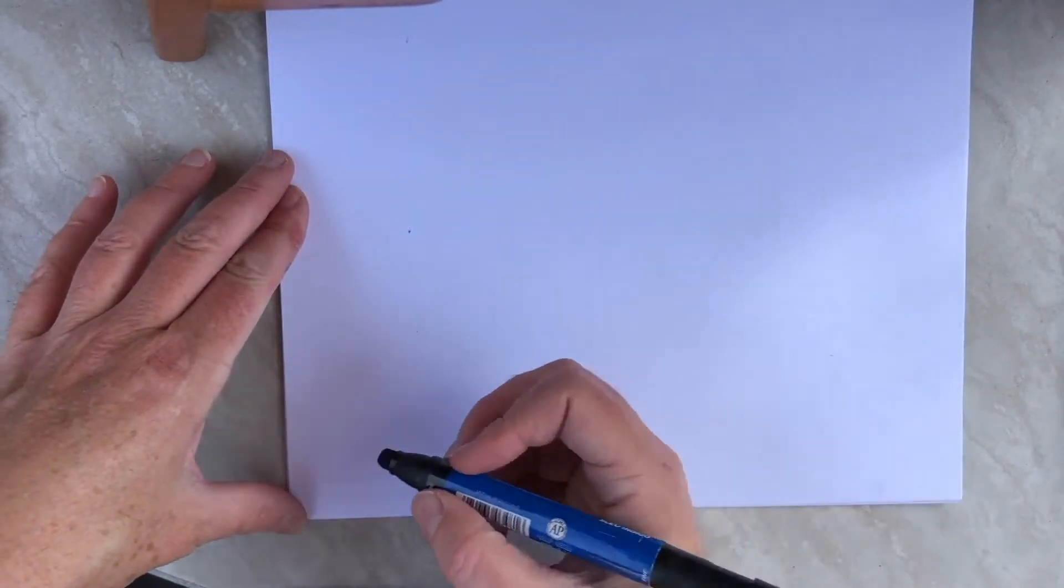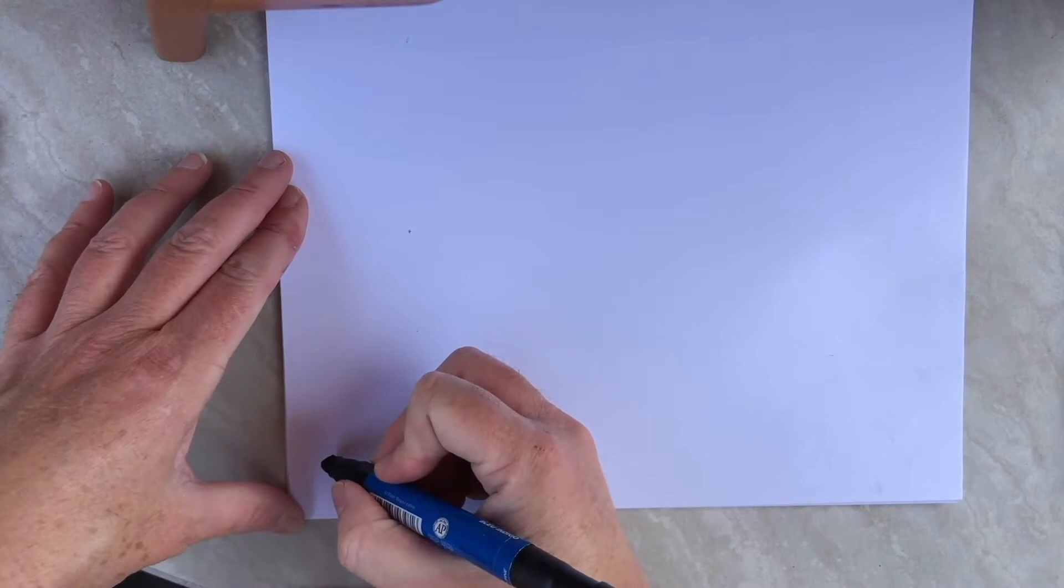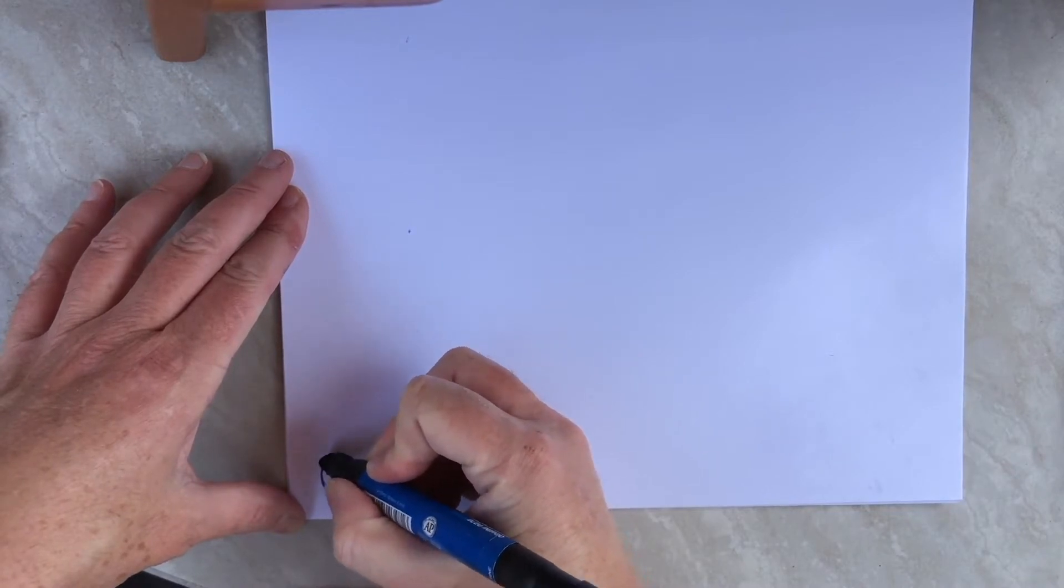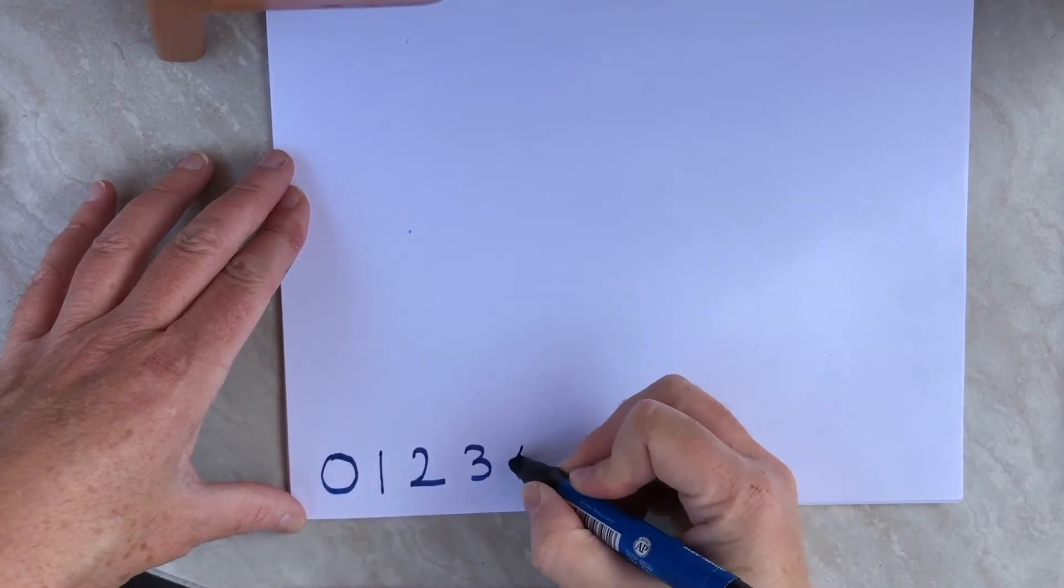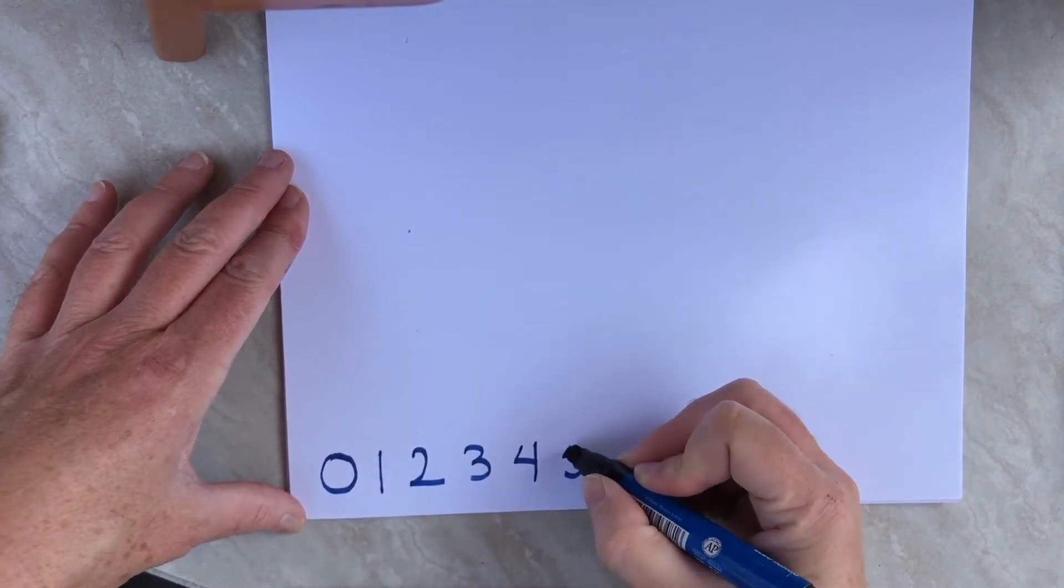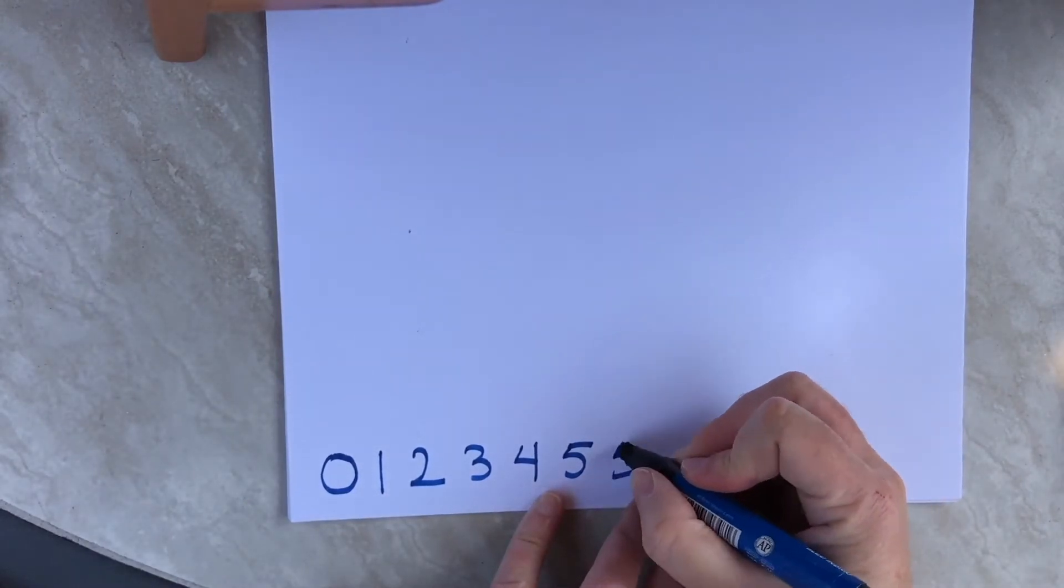So what you'll do is you start by writing in kind of big numbers, the numbers in order: zero, one, two, three, four, five. And now we're going to write the five a second time and then keep going.